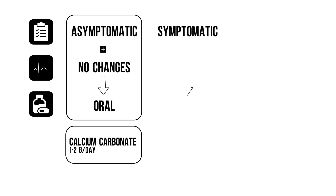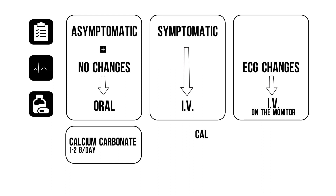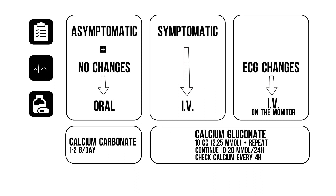Symptomatic patients should be treated intravenously, and if you see ECG changes, keep your patient on the monitor and consider medium care admission. IV treatment is with calcium gluconate — start with 10 cc, which equals 2.25 millimoles, and depending on the severity, repeat after 10 minutes. Consider starting continuous infusion with 10 to 20 millimoles per 24 hours. Check calcium levels every 4 hours and continue until calcium is above 2, then switch to oral supplementation if symptoms and ECG changes have resolved. Supplement vitamin D and magnesium if needed.